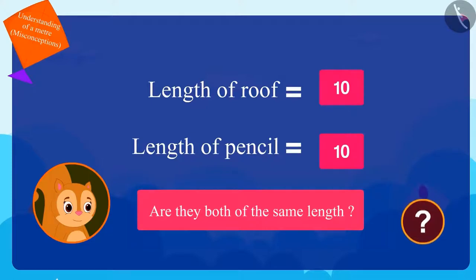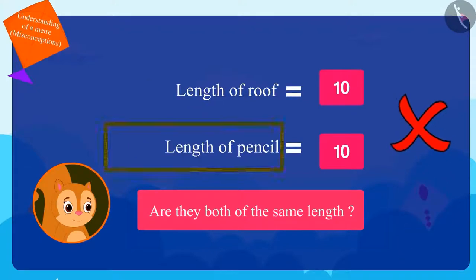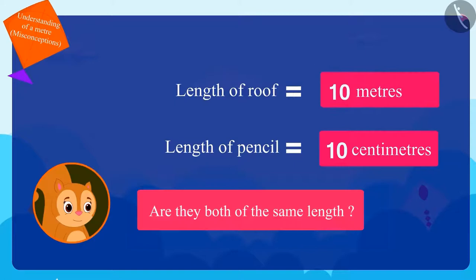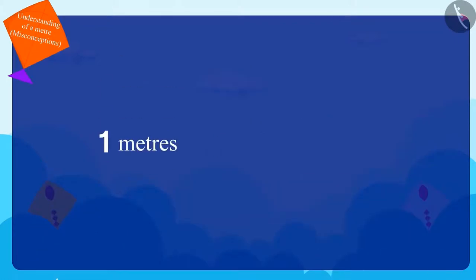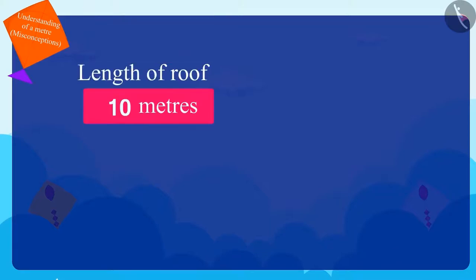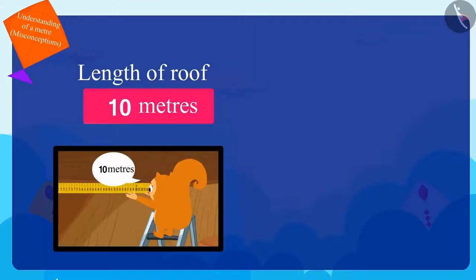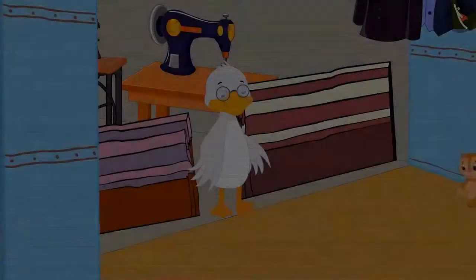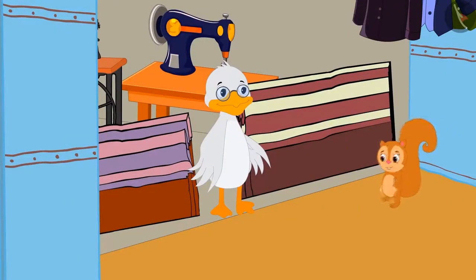What do you think, children? Is Chanda's thinking correct? No. Chanda's pencil is ten centimeters in length. And children, you know how many centimeters is equal to one meter? Exactly — hundred centimeters! The length of the roof is ten meters, and the length of the pencil is ten centimeters. Which means the roof is bigger than the pencil. Chanda understood this also.